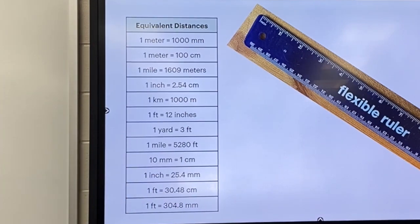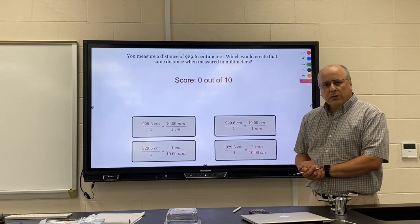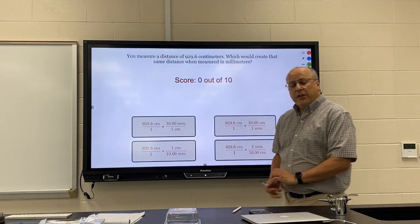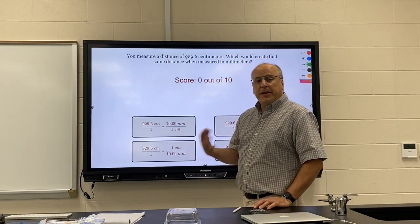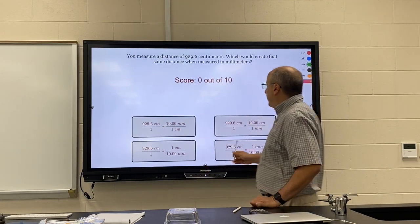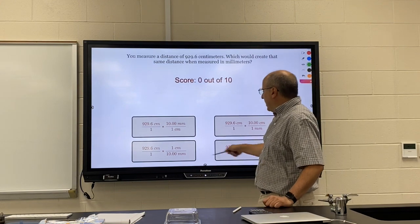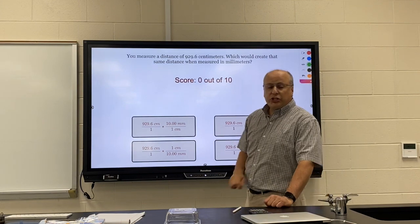And then when you're done, unpause. So what you're going to have to do to prove you understand the factor label method is score 10 in a row right on this challenge.